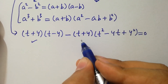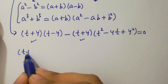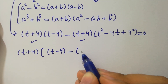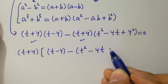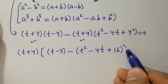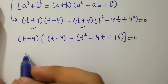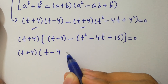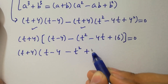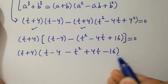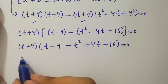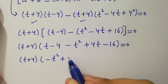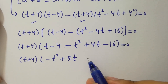We can take t plus 4 as common. So t plus 4 is factored out, and we expand the remaining terms. This gives us t plus 4 times the second factor, simplified as t plus 4 multiplied by the bracket, resulting in t plus 4 times minus t squared plus 5t minus 4 minus 16 minus 20 equal to 0.